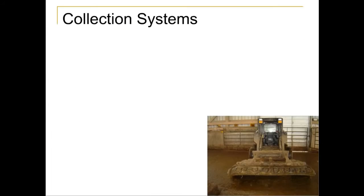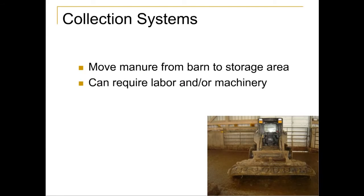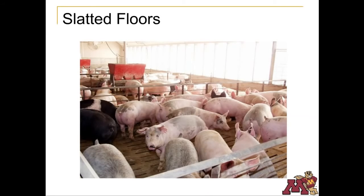If manure is not stored in place, it must be collected and either hauled directly to the field or to a storage area. Manure collection and transport to storage typically requires both additional labor and equipment. With deep pit or shallow pit systems, manure is stored either long-term or short-term below the animal housing area. Gravity and hoof traffic serve as cheap transport to storage through slats in the floor. The deeper the pit, the less often it will need to be emptied. Shallow pits are often emptied with the help of gravity to a larger manure storage structure.